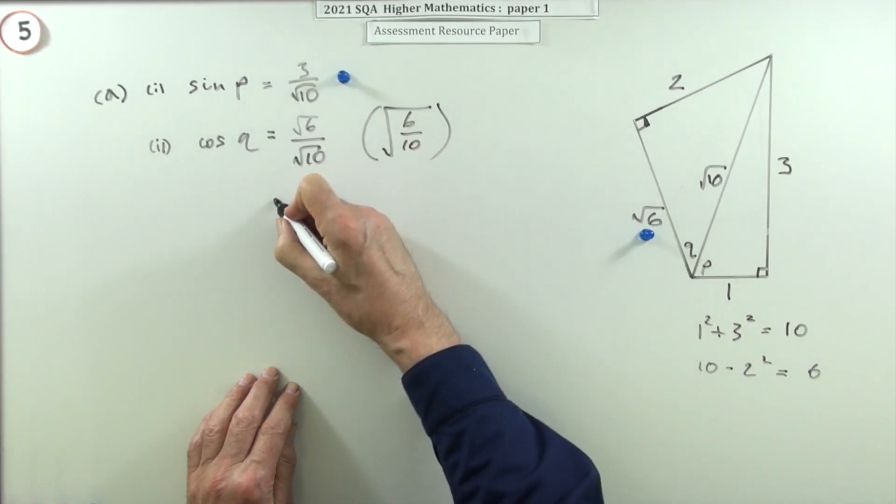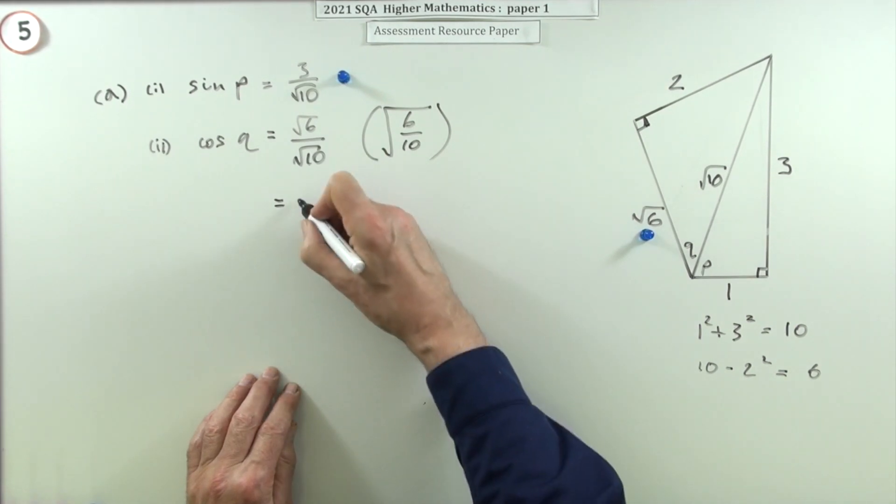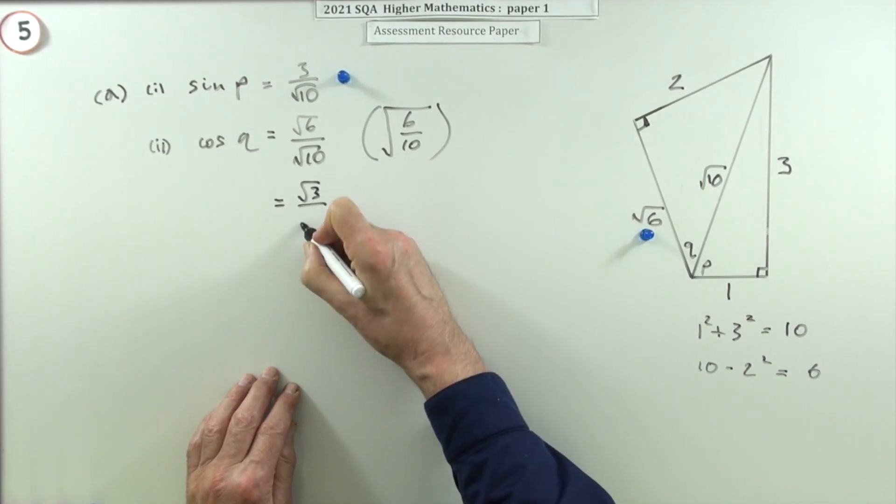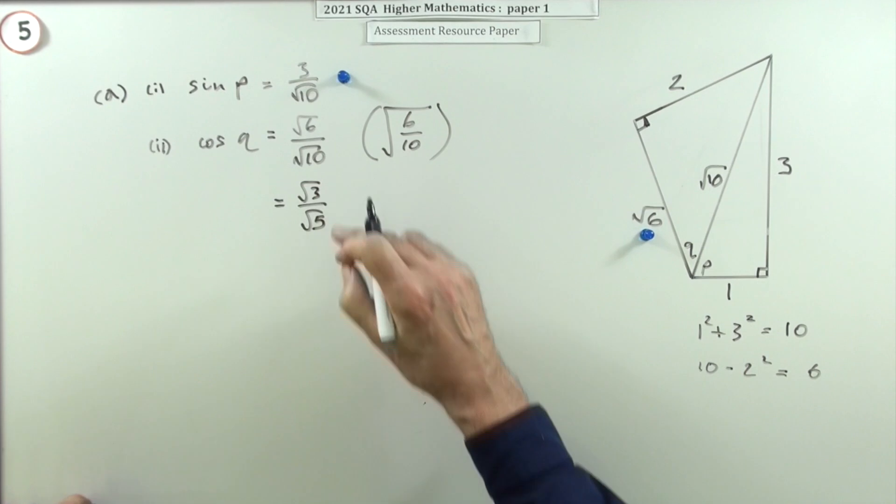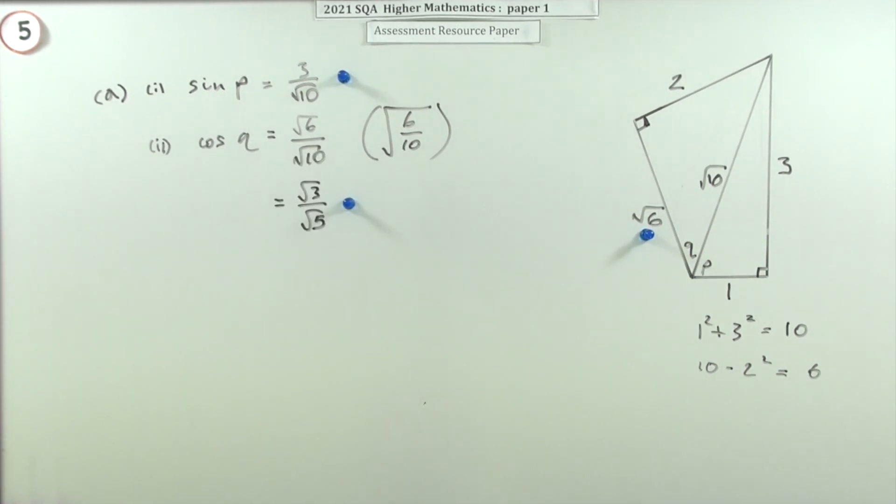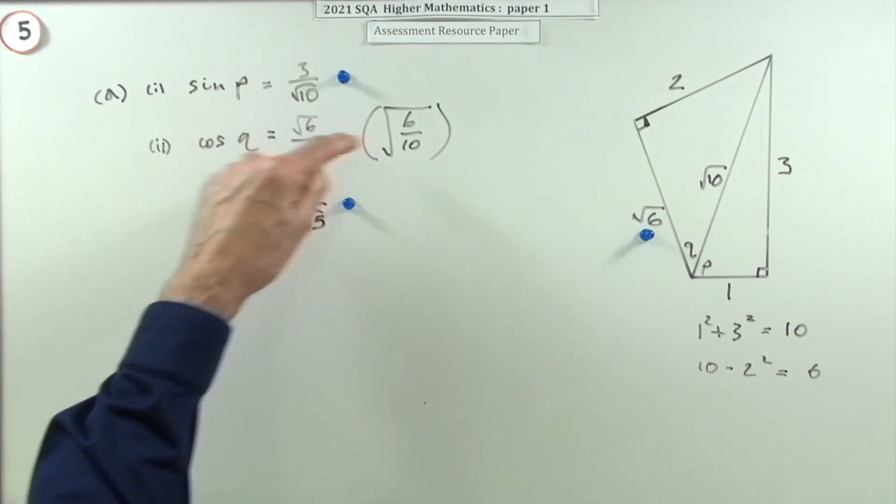And you should be simplifying, so that's the second mark in that question. You can't leave it as 6/10.